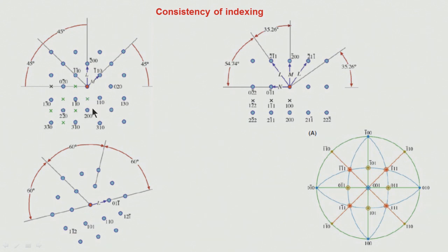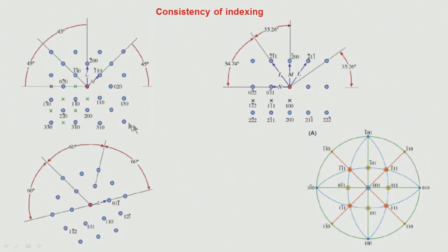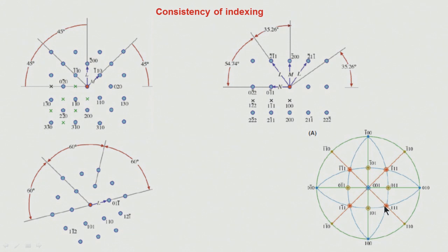This is how a spot pattern will appear in these different orientations. For a BCC lattice, the 001, 011, and 111 zone axis patterns are shown. Tilting from one to another, the indexing is always done consistently using the stereogram.